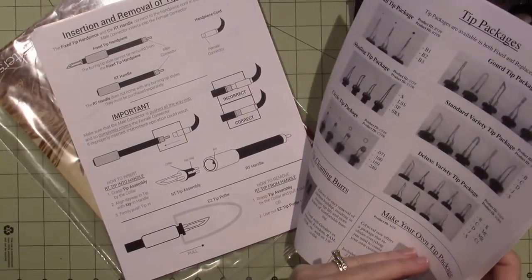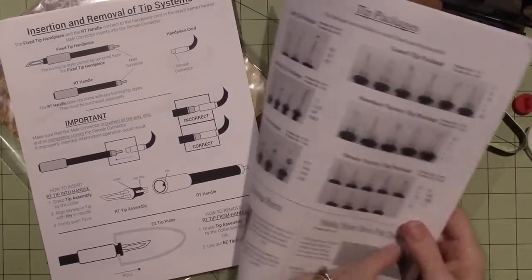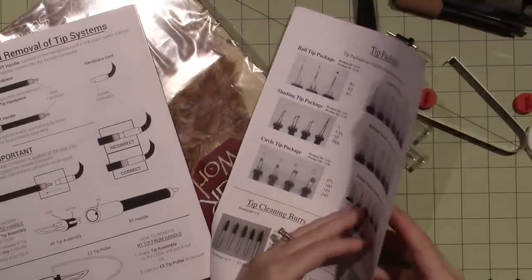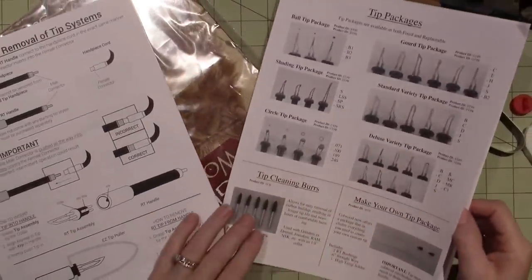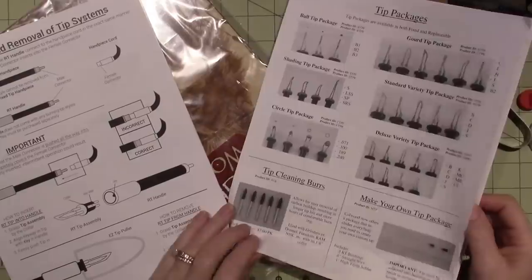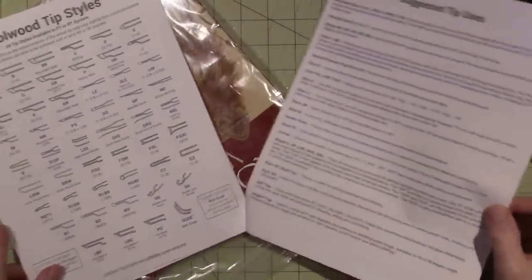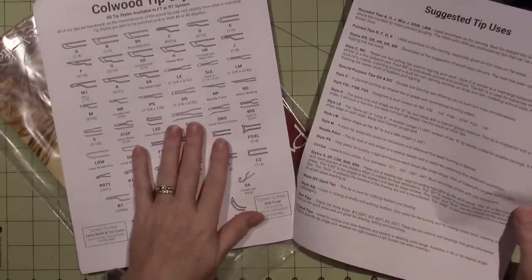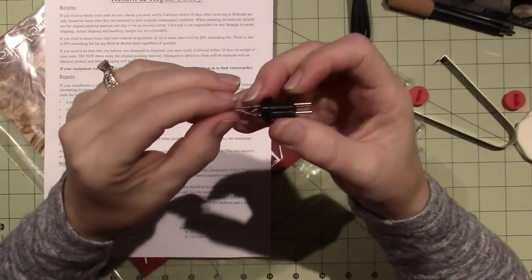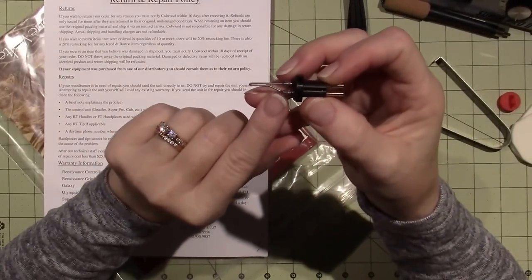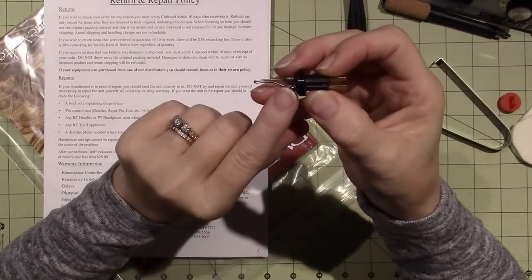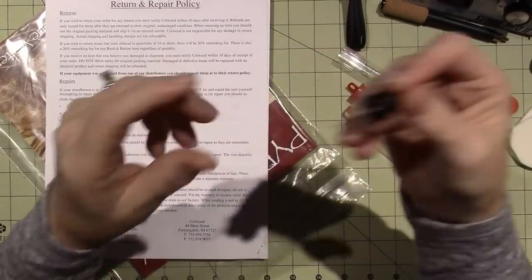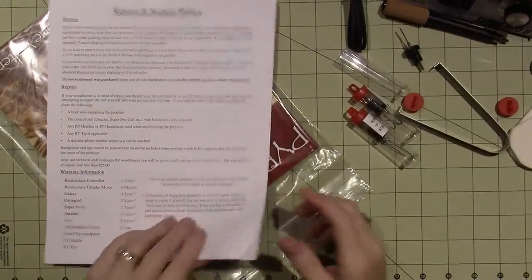There's information on insertion and removal of tips, and tip packages. I may end up getting a tip package. There's also tip cleaning burrs - this is all the stuff you can get. These are the actual wires that you can replace. I know these wires are replaceable, but you may need to solder them on. I'll have to look into that.